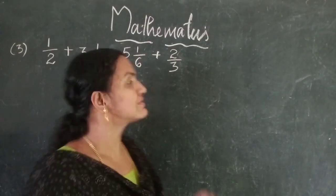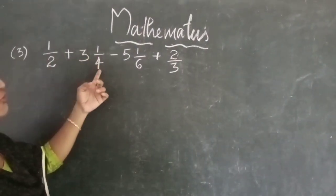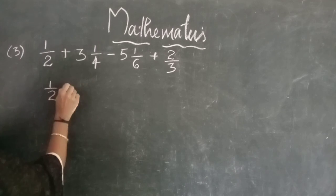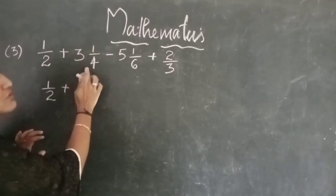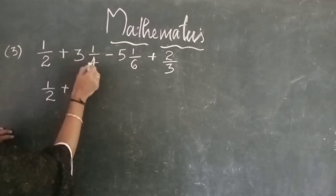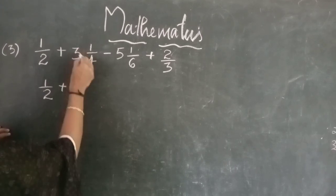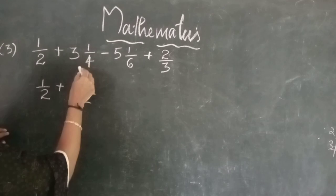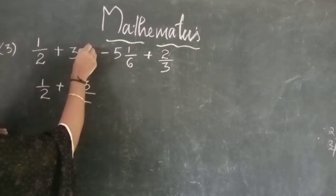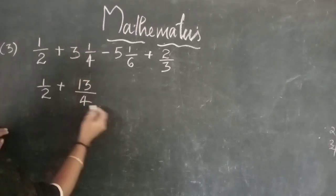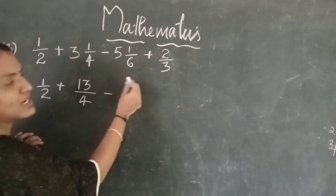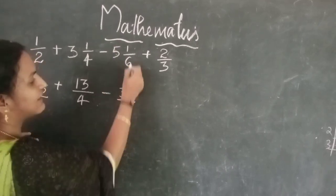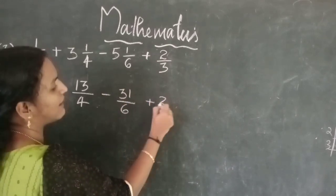Next, we shall try some fraction problems: 1/2 plus 3 and 1/4, minus 5 and 1/6, plus 2/3. Convert the mixed fractions to improper fractions. 3 and 1/4: multiply 3 by 4 and add 1 — that is 12 plus 1 equals 13 — so 13/4. For 5 and 1/6: 5 times 6 is 30, plus 1 is 31, so 31/6. The expression becomes 1/2 plus 13/4 minus 31/6 plus 2/3.